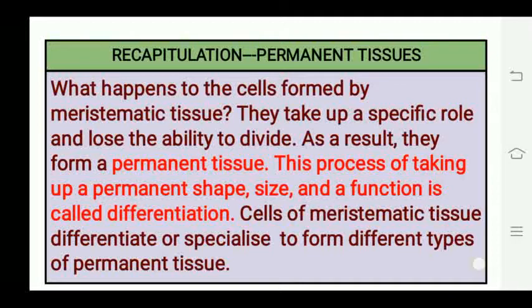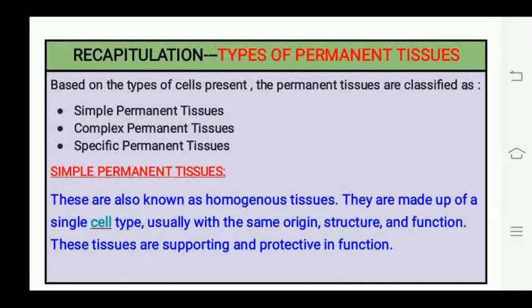Based on the types of cells present — whether single or multiple types, thick or thin cell walls, dead or living — permanent tissues are divided into three categories: simple permanent tissues, complex permanent tissues, and special permanent tissues. Simple permanent tissues are made up of only one type of structurally and functionally similar cells, making them homogeneous tissues, and they are supporting and protective in function.